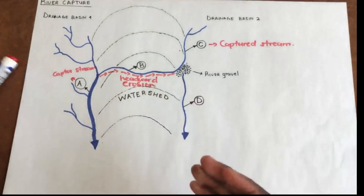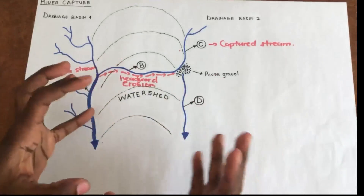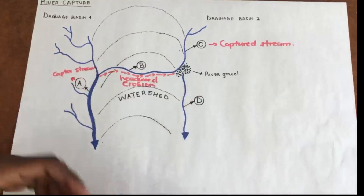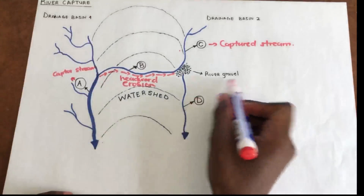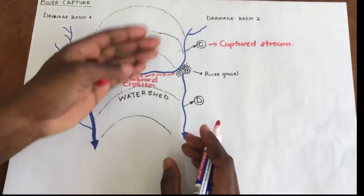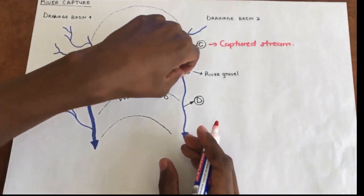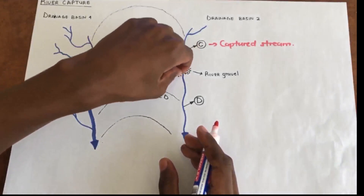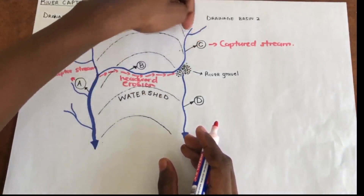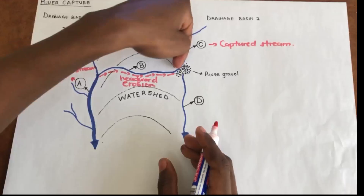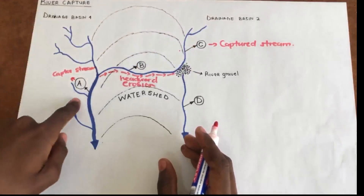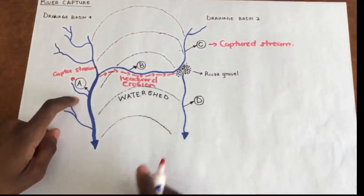When erosion happens, eroded material is deposited. The river gravel is the eroded material that has been deposited at this point. It acts as a blockade, preventing water from stream C from flowing downstream and forcing that water to turn and flow into stream A instead.